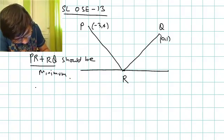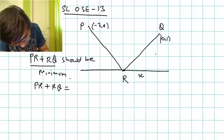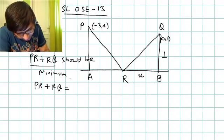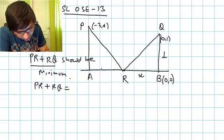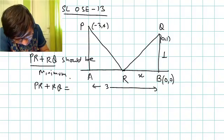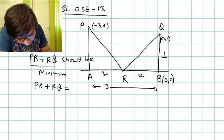Let's try to express PR plus RQ in mathematical form. For that, I assume this is the x-coordinate. This is the y-coordinate, length is 1. Let's say this is B, RB is x. Similarly I drop a perpendicular from P on the x-axis and assume this point is A. This x-coordinate is 0, so it means B is the origin. The x-coordinate of P is -3, so total length of AB is 3 units. If I have taken this as x, this is 3-x.